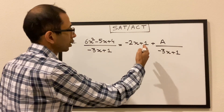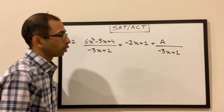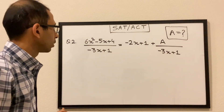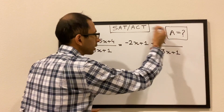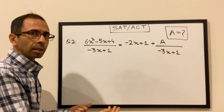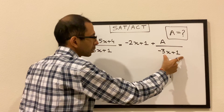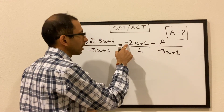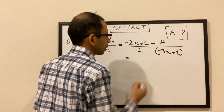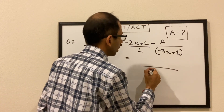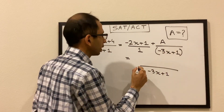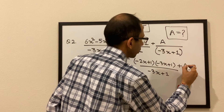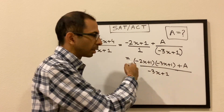Question 2: 6x² minus 5x plus 4 divided by minus 3x plus 1, equals minus 2x plus 1 plus a divided by minus 3x plus 1, and we have to find the value of a. This is very similar to question one. We simplify the right side into a single fraction — noticing the denominators minus 3x plus 1 are the same. So we write minus 2x plus 1 divided by 1 plus a over minus 3x plus 1, making the common denominator minus 3x plus 1, giving us minus 2x plus 1 times minus 3x plus 1 plus a in the numerator.